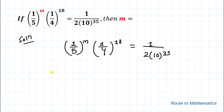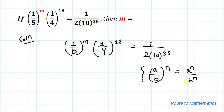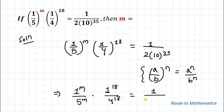In the next step, we use the rule: (a/b) to the power n equals a to the power n divided by b to the power n. Applying this exponential rule, we can write the equation as 1 to the power m divided by 5 to the power m, multiplied with 1 to the power 18 divided by 4 to the power 18, equals 1/2 multiplied with 10 to the power 35.